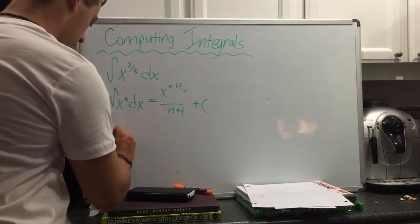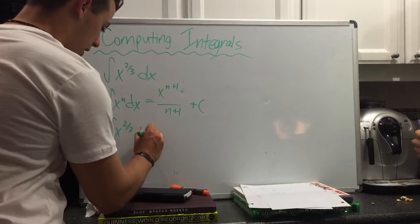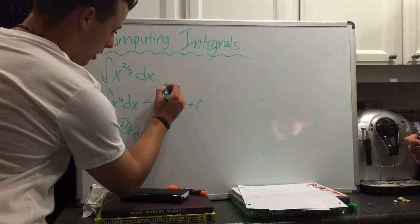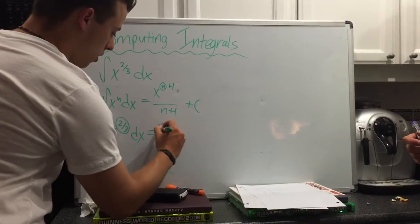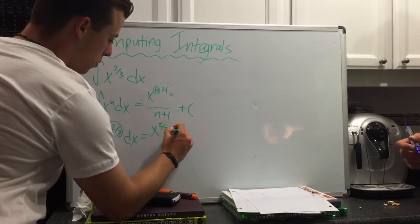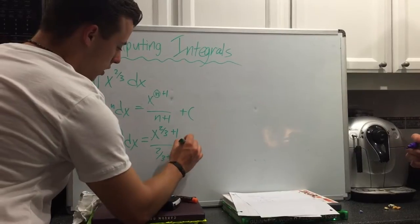When we apply that to this integral, we have x to the power of 2/3 dx. We use 2/3 as our n. So we get x to the 2/3 plus 1 over 2/3 plus 1 plus c.